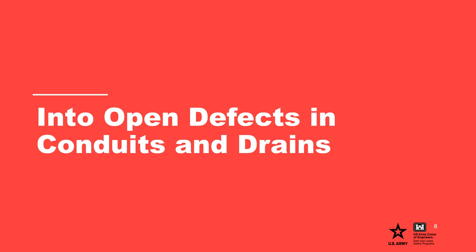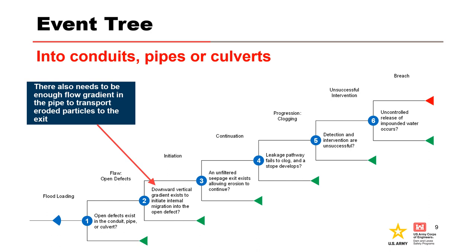Our first scenario of internal migration into open defects in conduits or drains will be discussed in the following slides. Here's the event tree for evaluating internal migration into conduits, pipes, or culverts. Node 1 is the flaw node — an open defect that exists in the conduit or pipe. Node 2 is initiation: we need a downward gradient to initiate internal migration, and there also has to be enough water flow in the pipe to transport the eroded particles downstream.